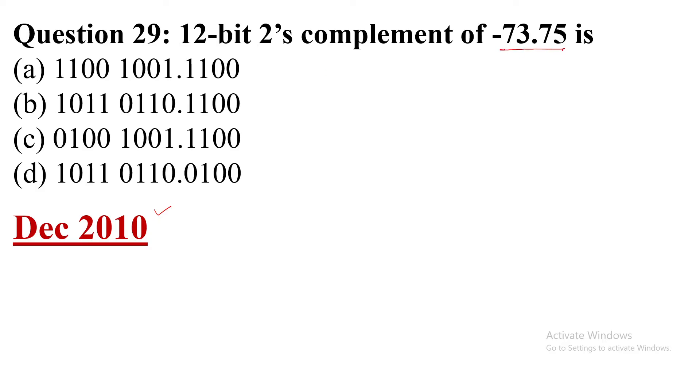So this is a negative value in decimal form. Whenever we write it in binary, this is a very easy method I am sharing. It is the 2's power notation. First we will write plus 73.75. 75 is separate and 73 should be separate.